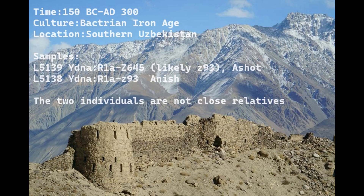In this video we'll be taking a look at the autosomal DNA, predicted phenotype traits, and GEDmatch results of two Iron Age Bactrians from southern Uzbekistan. They're both male; their names I give them are Ashot and Anish. They both have R1AZ93, which is the Indo-Iranian subclade of R1A, and the two individuals are not close relatives.